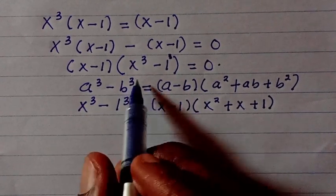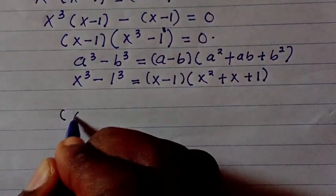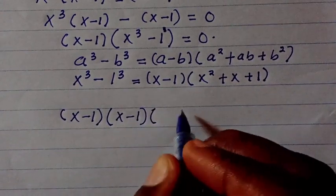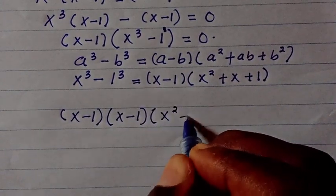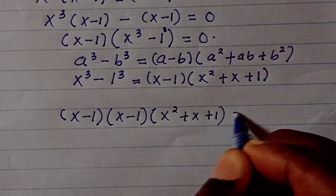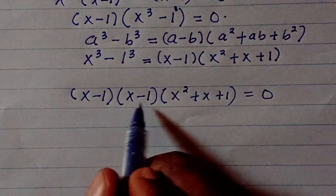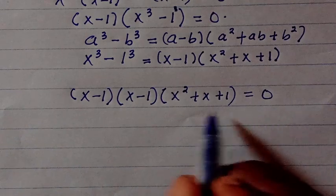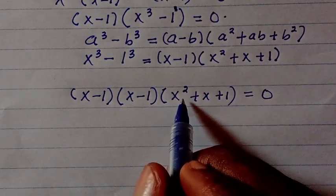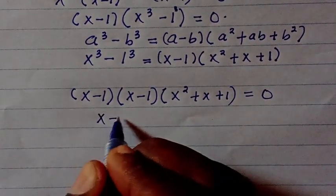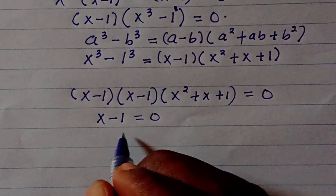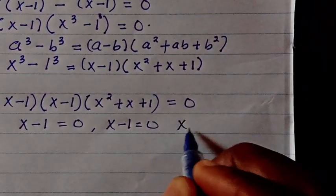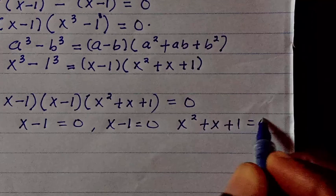So by placing this into our expression, we have (x minus 1)(x minus 1)(x squared plus x plus 1) equals 0. So here we have x minus 1 equals 0, we have x minus 1 equals 0 again, and we are going to let the third factor x squared plus x plus 1 equals 0.